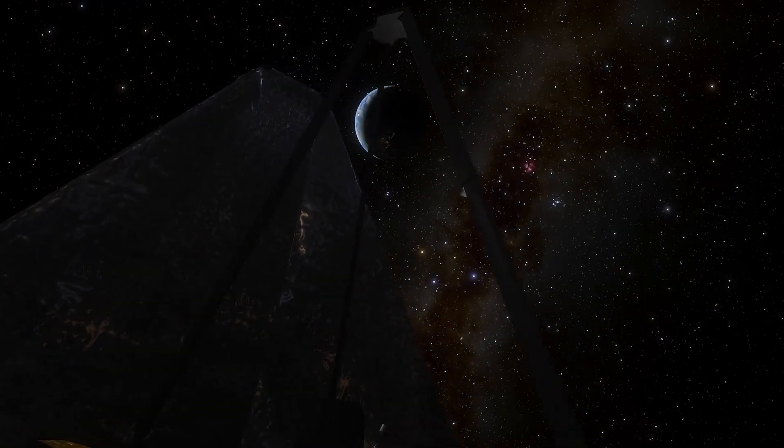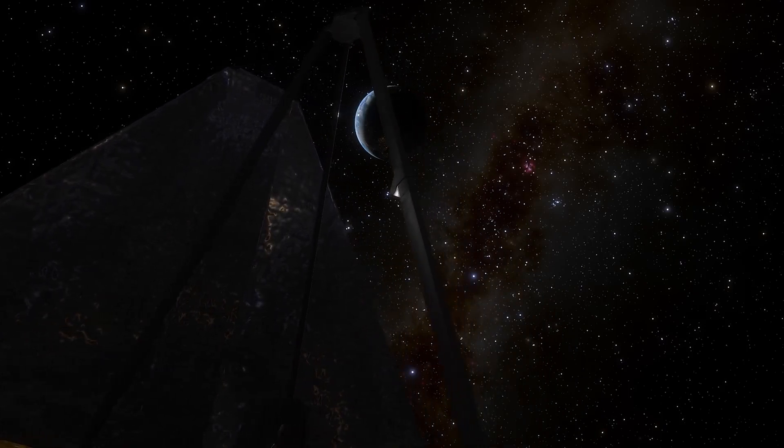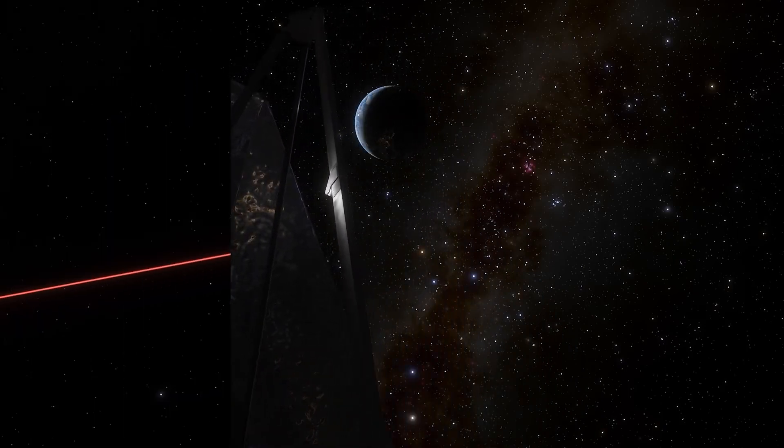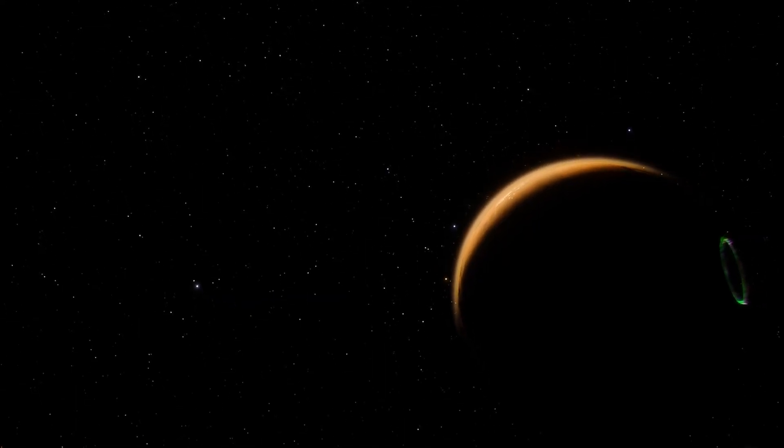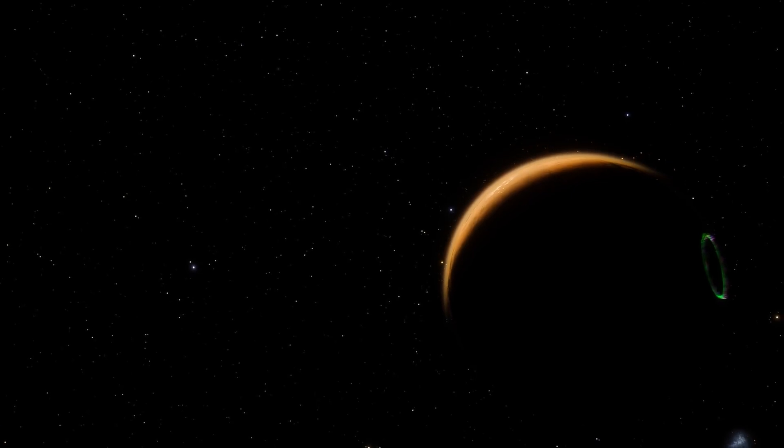While exploring the cosmos and transmitting critical data back to Earth, the telescope observed unique urban lights coming from the exoplanet Proxima Centauri b. These lights, as their name suggests, are the first to be seen in space.